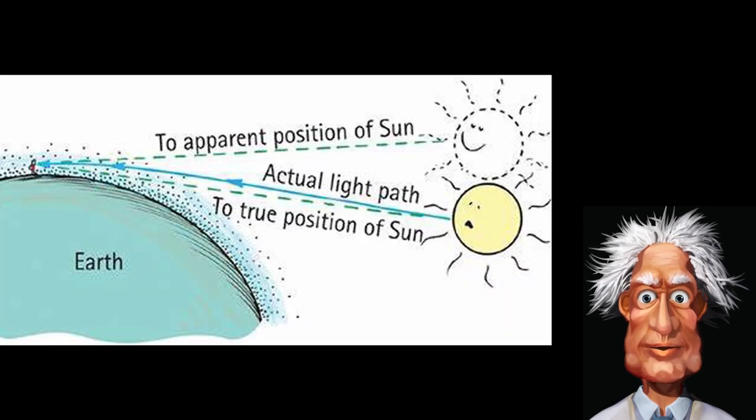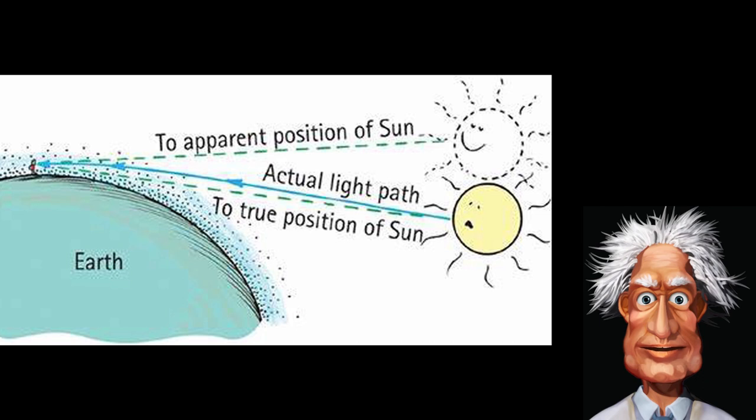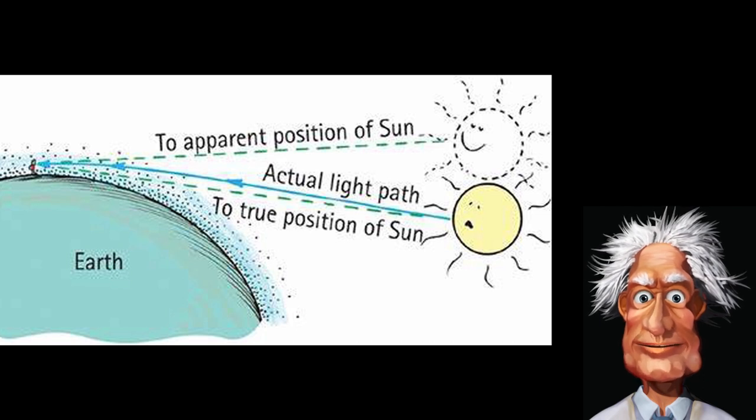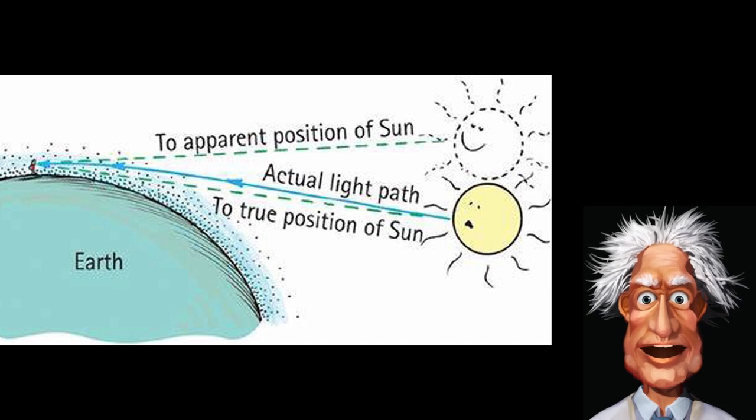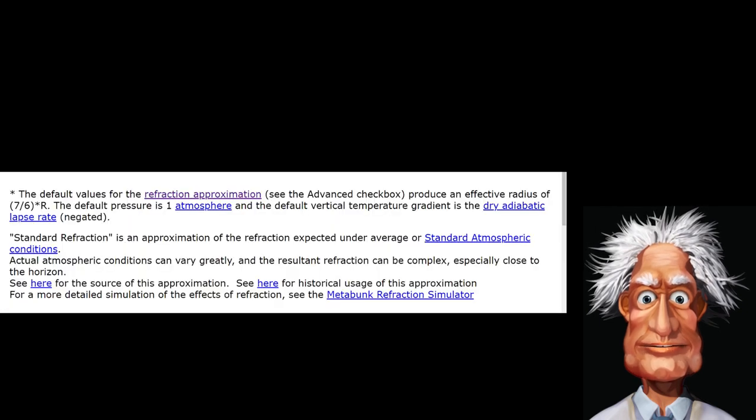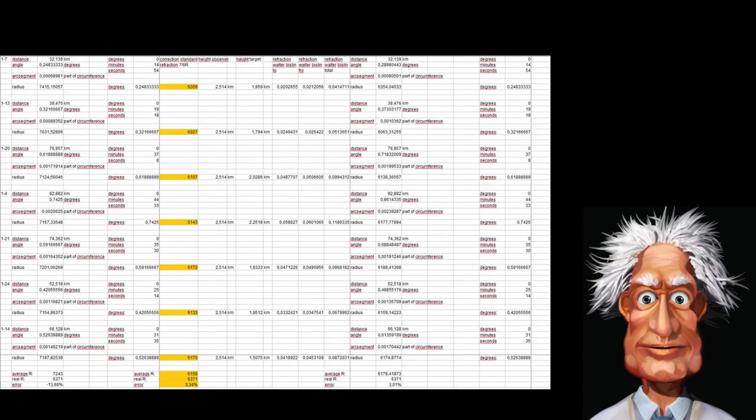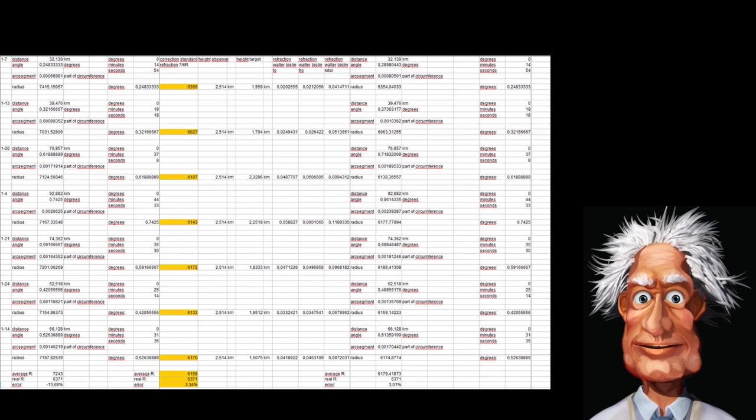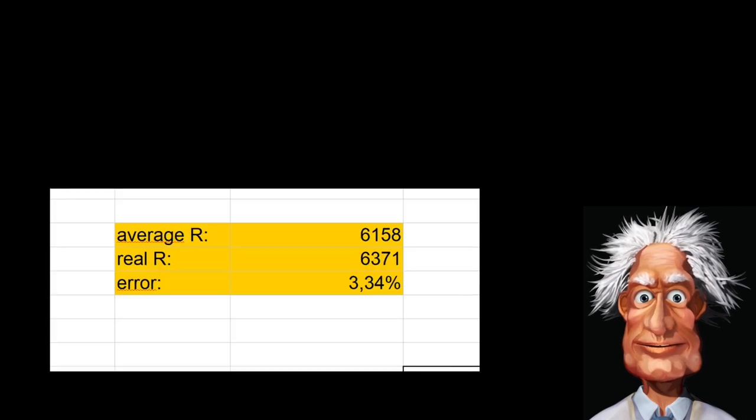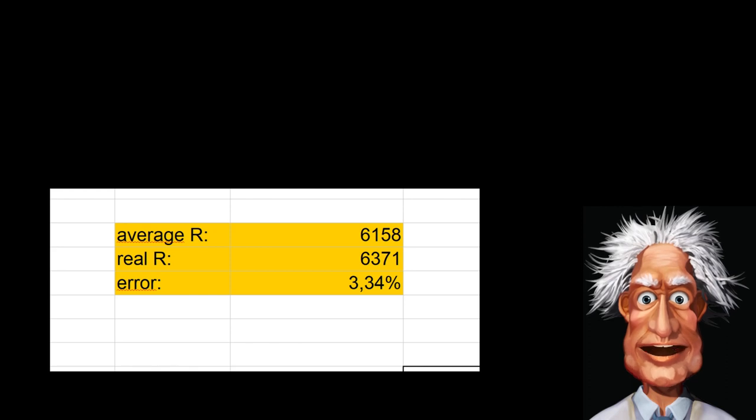And that's where refraction comes into play. Under standard atmospheric conditions, light is bent downwards, which makes objects at a distance be seen at a higher location than they really are. So the zenith measurements will result in a lower value than in reality. There is a correction for this problem. First, there is the simple rule of thumb of 7 over 6 times r. This means that due to the atmospheric refraction, the radius r of the earth is seen as 7 over 6 times as large as it is in reality. When we apply this correction we get these numbers, resulting in an average calculated radius of the earth of 6,158 kilometers. That's just over 3% less than the generally accepted value of 6,371.